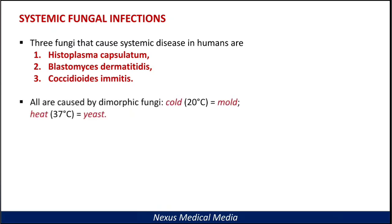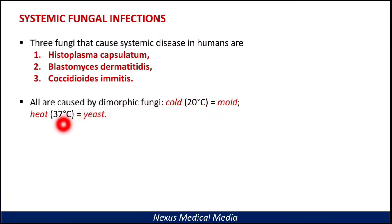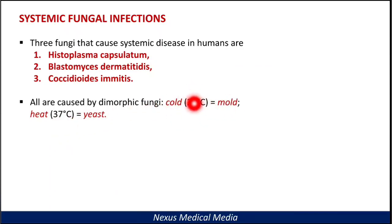All systemic fungal infections are caused by the dimorphic fungi, which are molds at 20 degrees Celsius and yeasts at 37 degrees Celsius. You can remember this as: cold mold at 20 degrees, heat yeast at 37 degrees.